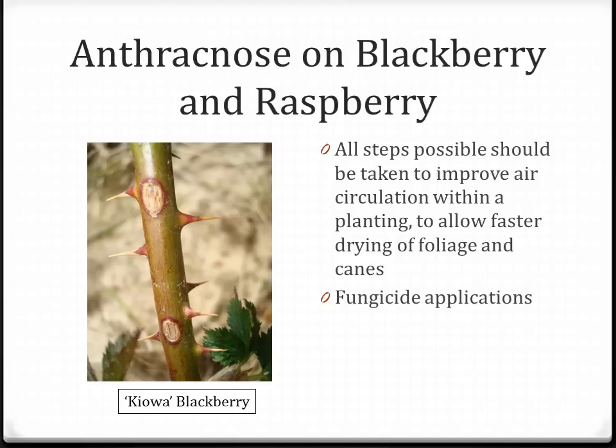Here are some things to look for on your plants. This is a picture of anthracnose on blackberries — I also showed anthracnose on grape earlier, but this is what it looks like on blackberry and raspberry. It has a very distinct lesion with a purplish-red ring around it, which is very diagnostic of anthracnose on raspberries. Removal of infected canes and then fungicide applications to protect uninfected canes would be in order.